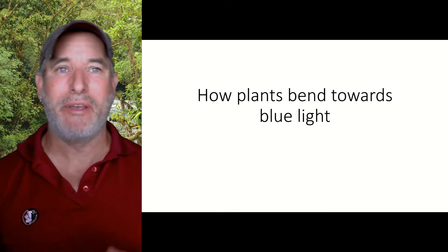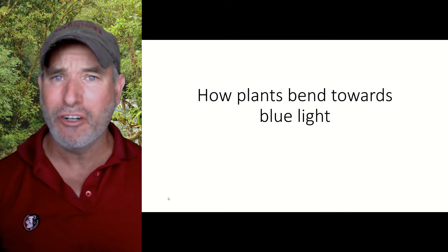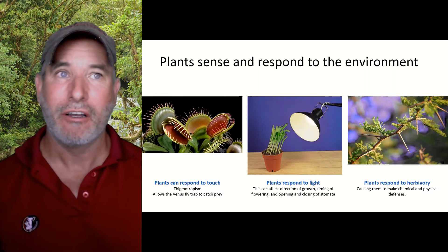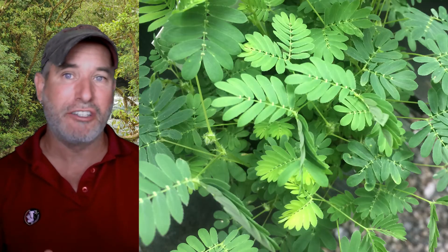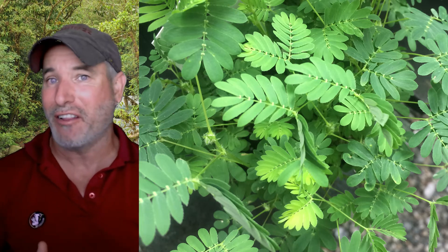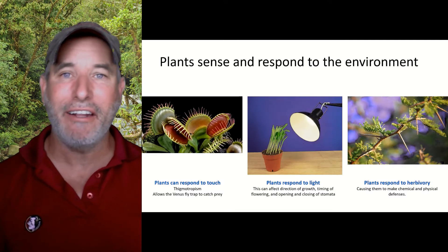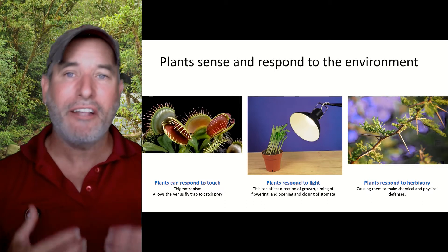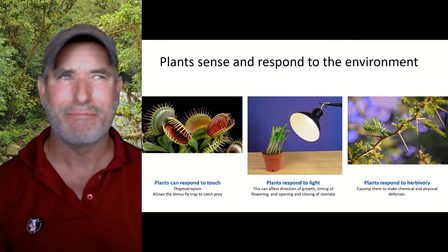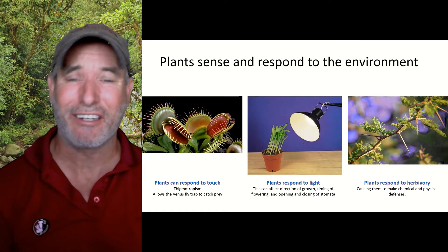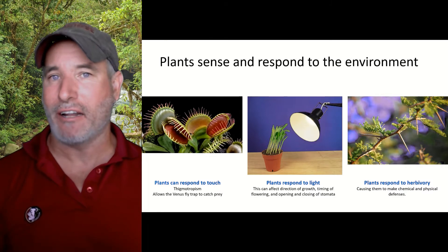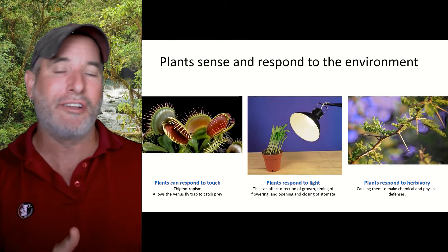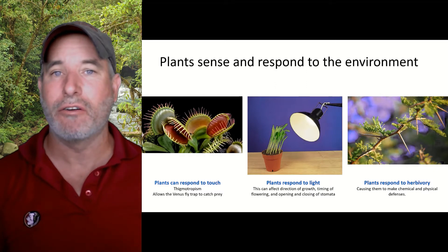We always think of plants as being stationary and not moving around like animals, but it turns out that plants can totally respond to their environment. They can respond to touch — I always talk about the Venus flytrap, but there's also a sensitive vine. If you touch it, run your fingers down the leaves, they'll close up. Plants can also respond to light, herbivory, and they can grow toward nutrients. They can also respond to gravity, which is pretty interesting. A plant responding to light makes a lot of sense, because plants need light — they do photosynthesis — so growing or bending toward the light makes sense.